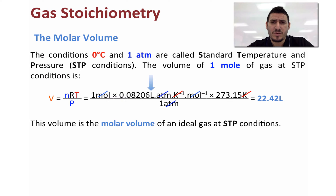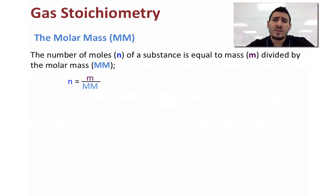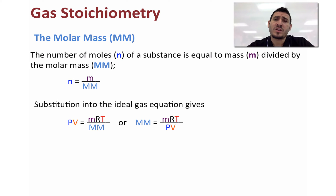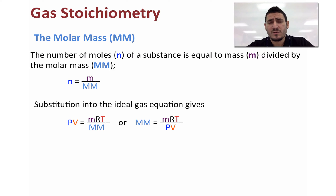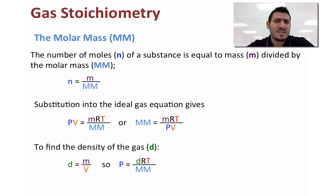We can also find the molar mass from the ideal gas law. Since the number of moles equals mass divided by molar mass, substituting into PV = nRT gives PV = mRT/M. Rearranging, the molar mass M = mRT/PV. Similarly, since density equals m/V, we can express pressure as P = dRT/M, where d is the density.